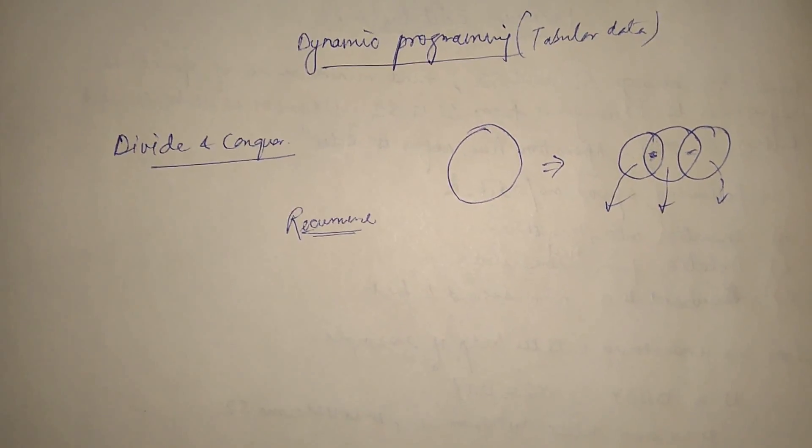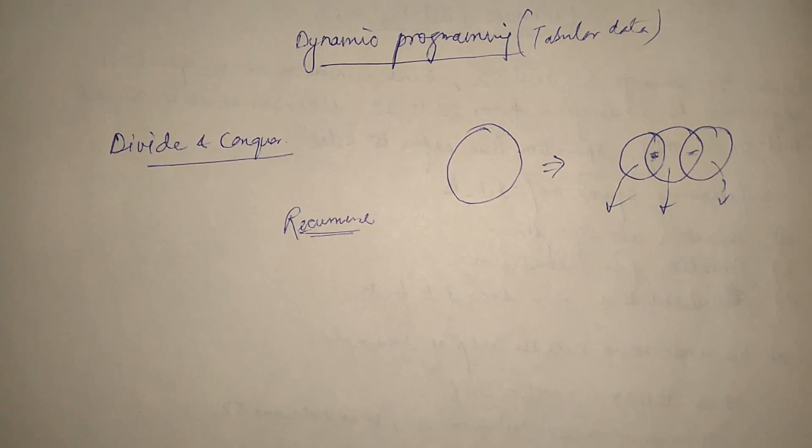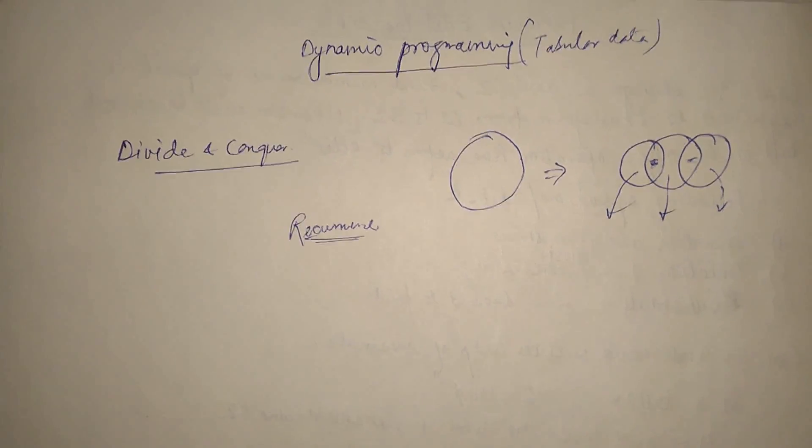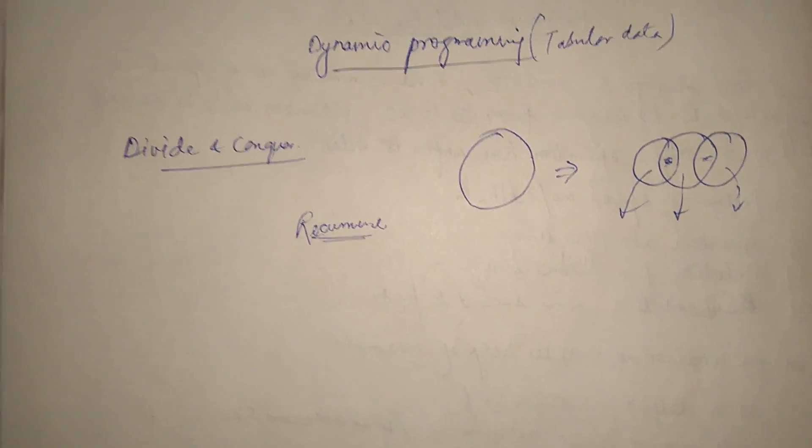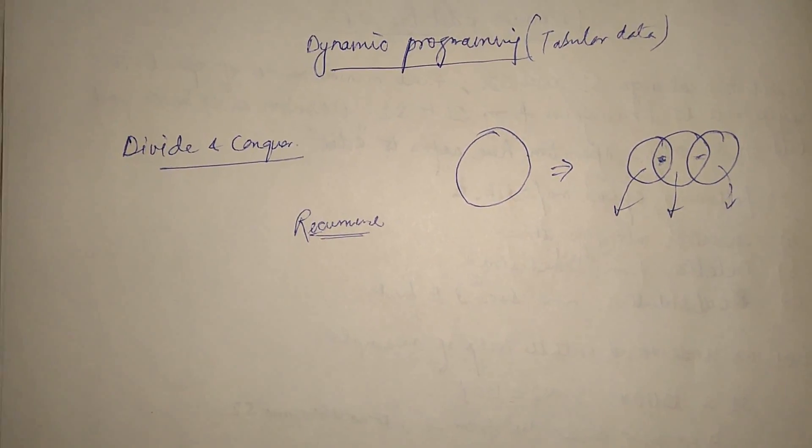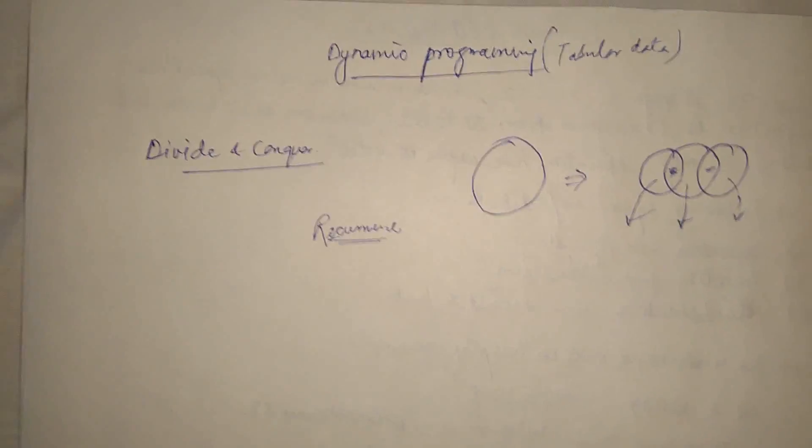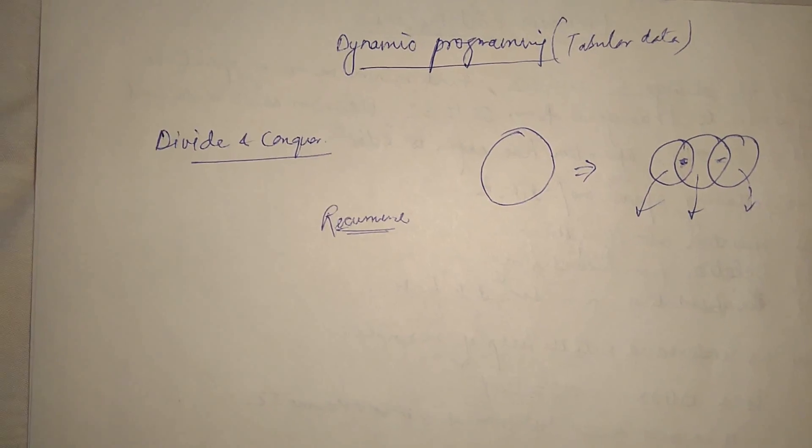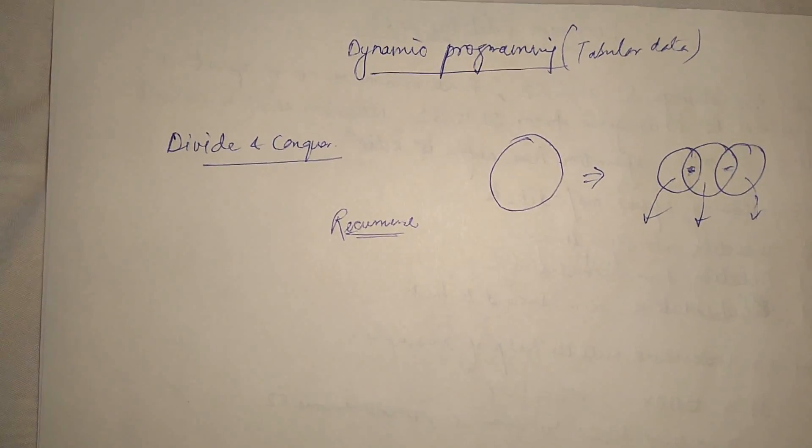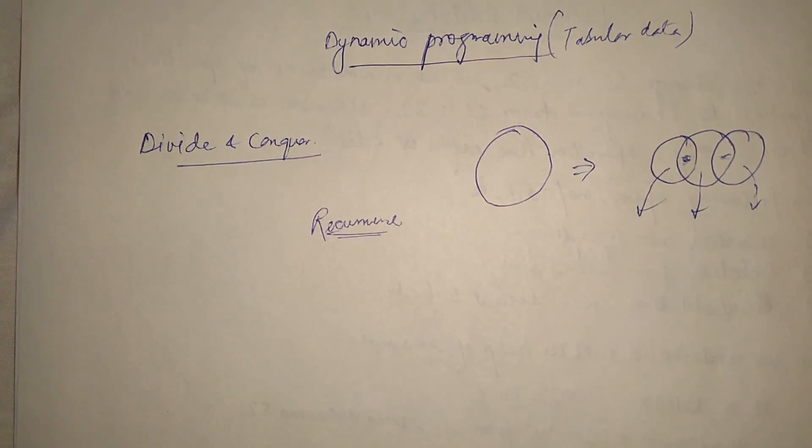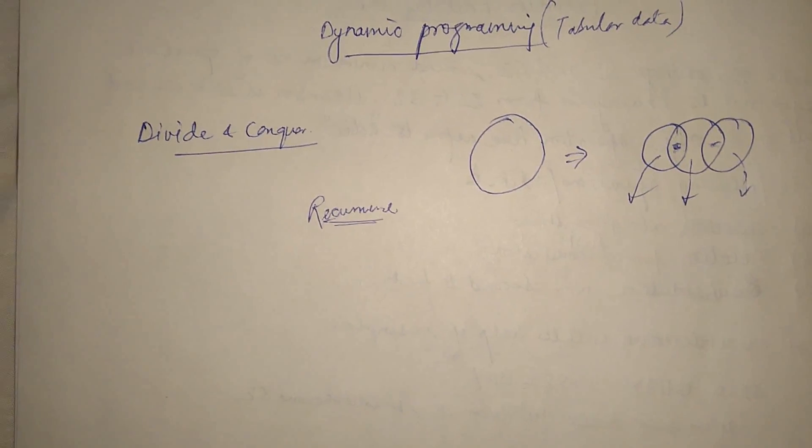So if the subproblems overlap, then we apply dynamic programming. So to get least time for computation. And this dynamic programming is mainly applied to the optimization problem where we need to optimize. So sometime this dynamic programming is also known as dynamic optimization.